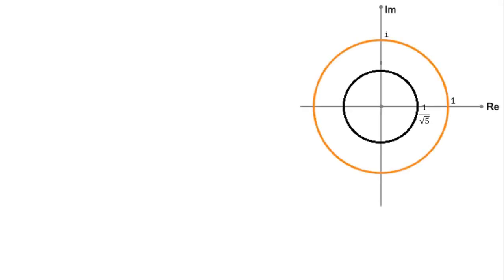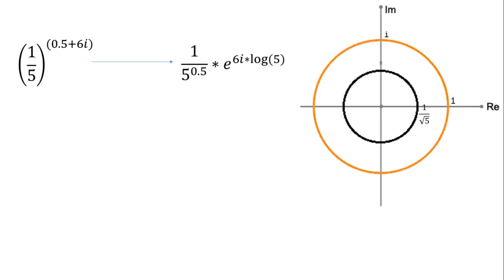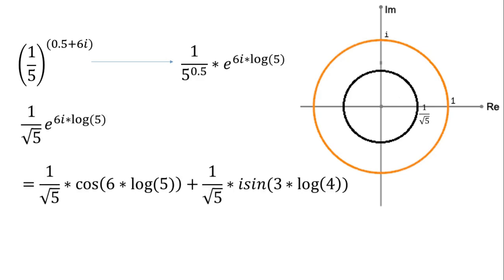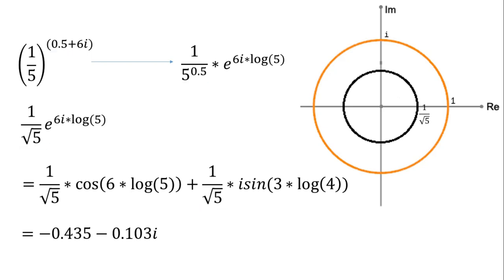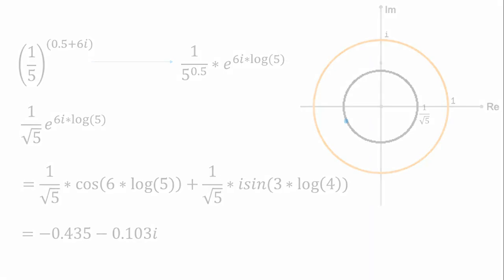Another example is 1 over 5 to the power of one-half plus 6i. There are a few differences from the previous example, but the main difference is the real part of the exponent, which is why the radius is smaller than that of the previous one.